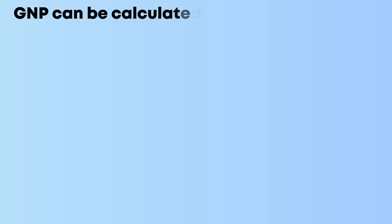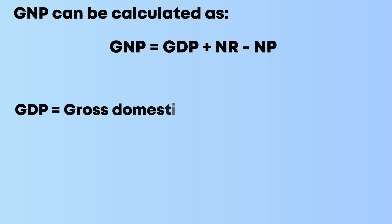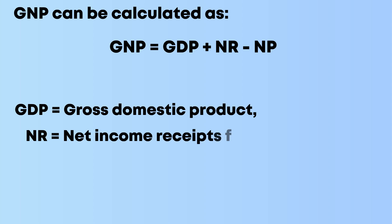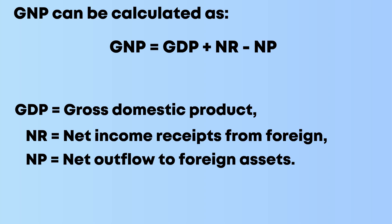GNP can be calculated as: GNP equals GDP plus NR minus NP. Where GDP equals gross domestic product, NR equals net income receipts from foreign assets, and NP equals net outflow to foreign assets.